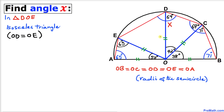Now let's focus on triangle DOE. This is an isosceles triangle since OD equals OE. Therefore both base angles are equal — let's call each of them alpha. Let's call the third angle at O beta.